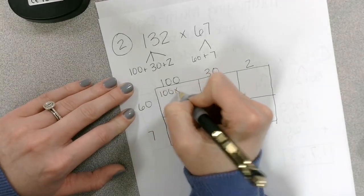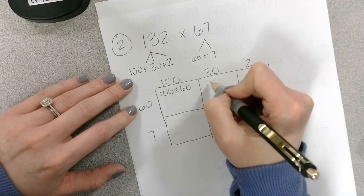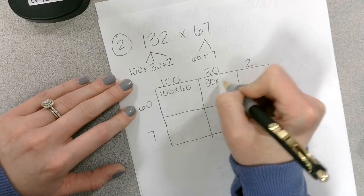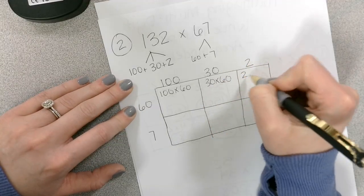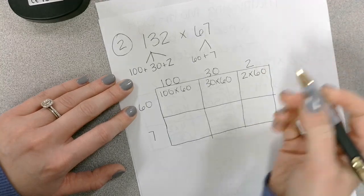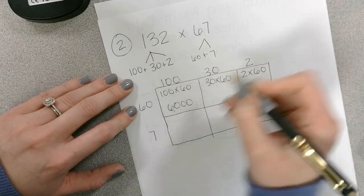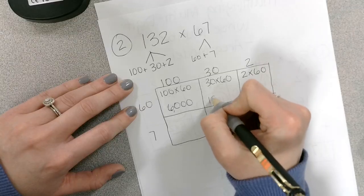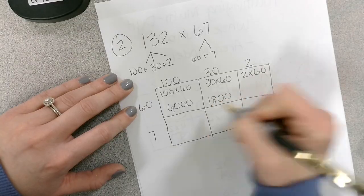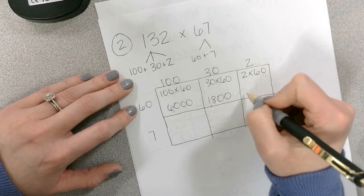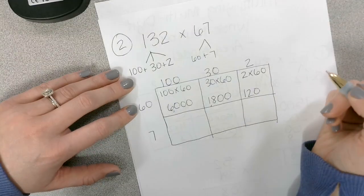So 100 times 60, 30 times 60, and 2 times 60, which would be 6,000. 3 times 6 is 18, plus 2 zeros is 1,800. And 2 times 6 is 12, plus a zero is 120.